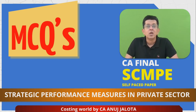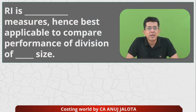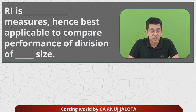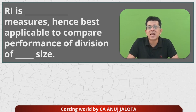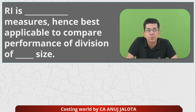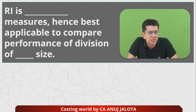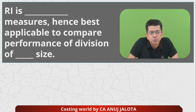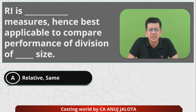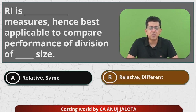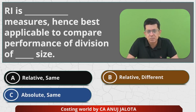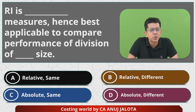Okay, let's get started. Please note — RI means Residual Income. The question is: Residual Income is a [blank] measure and hence best applicable to compare the performance of divisions of [blank] sizes. The four options are: relative-same, relative-different, absolute-same, and absolute-different. Your chapter must be over — this is a time to comment the correct answer.